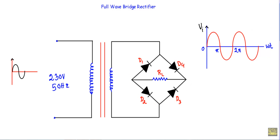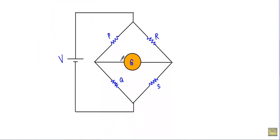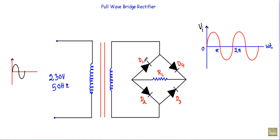In a Wheatstone bridge circuit structure, there are four resistors P, Q, R, S connected in a bridge configuration, with voltage applied between two terminals and a galvanometer connected between the other two terminals. In the bridge rectifier, instead of resistors we have diodes D1, D2, D3, and D4. Diodes D1 and D3 face the same direction, and diodes D2 and D4 face the same direction. A load resistor RL is connected where the galvanometer would be.